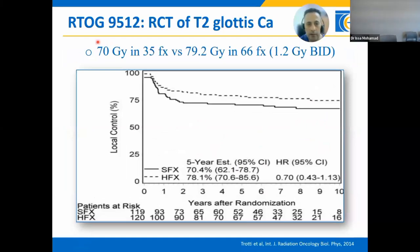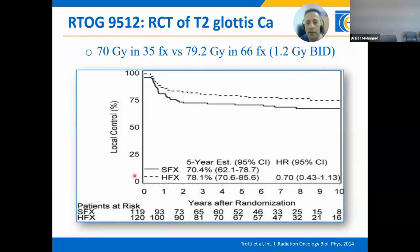Another trial is RTOG 9512, a phase 2 randomized clinical trial for T2 glottic larynx. Patients were randomized to 70 Gy in 35 fractions versus 79.2 Gy in 66 fractions using 1.2 Gy per fraction BID hyperfractionation. This study showed 8% superior local control for hyperfractionation at 5 years compared to standard fractionation, but this benefit was not statistically significant.